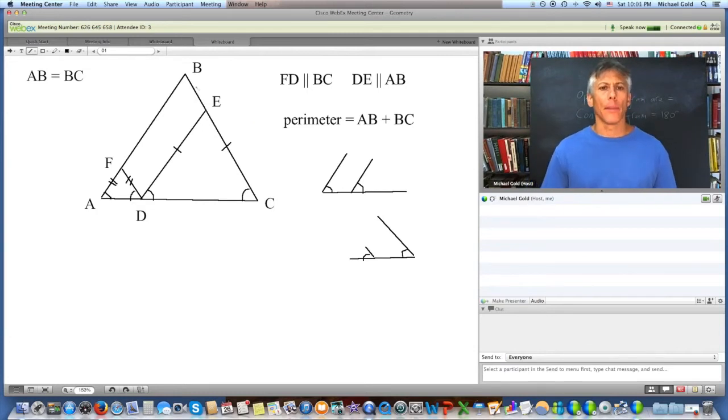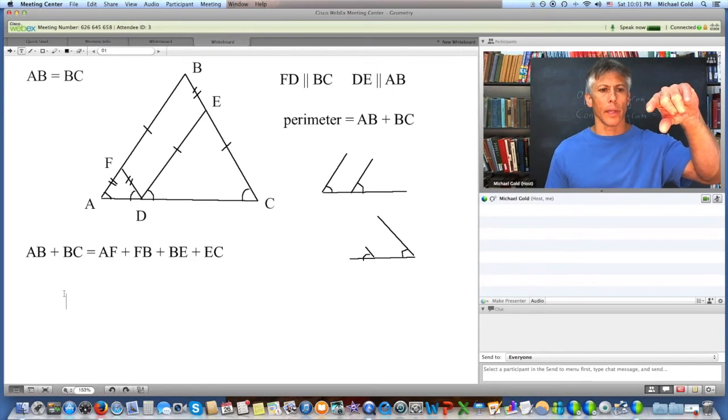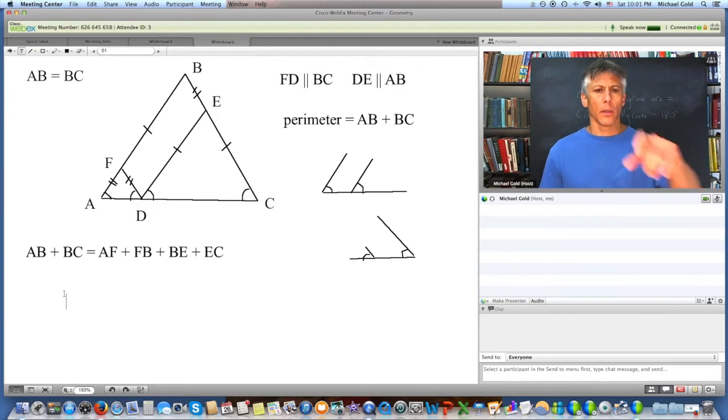in a parallelogram, opposite sides are congruent. Alright. So BE is equal to FD and FB equals DE. Opposite sides are congruent. Okay. Now let's put it all together and we are done. So AB plus BC equals AF plus FB plus BE plus EC. So notice all I did was get AB and look at the two segments that make it up, AF and FB, and I have them written down there. And then we got BC and broke it into two little segments, BE and EC. So AB is AF plus FB and BC is BE plus EC. Alright.